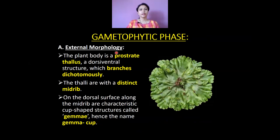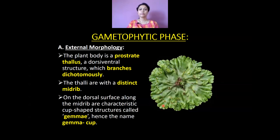The gametophytic phase — external morphology. Let us see about the external morphology of the thallus or the plant body of Marchantia. This is a picture showing the external morphology of the plant. The plant body is prostrate, thaloid, dorsoventrally flattened, and shows dichotomous branching. On the upper dorsal surface of the thallus, a distinct midrib is present, and on the ventral surface, the scales and rhizoids are present.